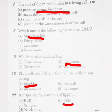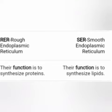Smooth endoplasmic reticulum — what is it? Endoplasmic reticulum is classified into two types on the basis of their function: R.E.R. and S.E.R. R.E.R. means rough endoplasmic reticulum, and its function is synthesis of protein. S.E.R. means smooth endoplasmic reticulum, and its function is to synthesize lipids.